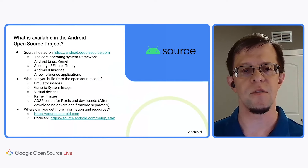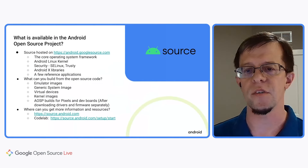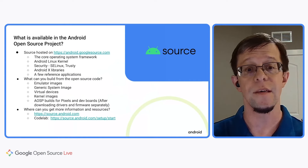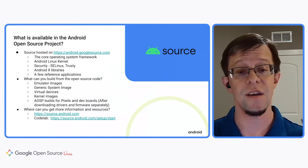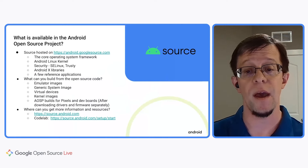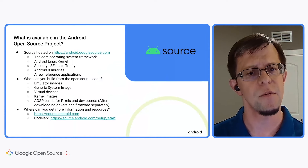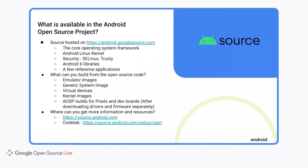So what is available in the Android open source? The source is hosted on android.googlesource.com and includes the core operating system framework, the Linux kernel, security libraries such as SELinux and Trusty, the AndroidX libraries (also known as Jetpack), which support application development and backward compatibility, and reference applications intended for testing. From the open source you can build emulator images, the generic system image for application validation, virtual cloud devices, kernel images, and AOSP builds for pixel boards and development boards such as the DragonBoard 845C.